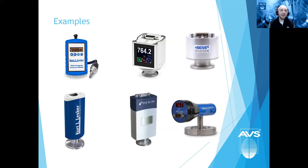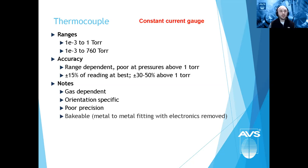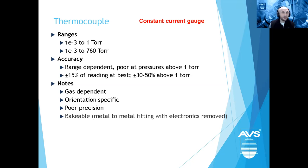Looking at specifications: thermocouple gauges give the shortest measurement range, atmosphere down to about 10⁻³ torr. Because accuracy above one torr is relatively poor, some thermocouple gauges only measure from one torr down to 10⁻³. These are gas-dependent and orientation specific, but since they're all metal and passive, they're bakeable — just remove the electronics. Piranis with a filament typically cover atmosphere (760 torr) down to about 10⁻⁴ torr. Above 10 torr, accuracy is limited to roughly ±10–15%. A key advantage is the ability to change filament material for different chemical resistivities.